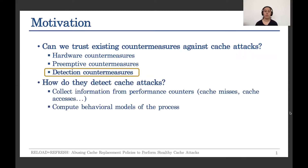These countermeasures use the information from performance counters to create behavioral models of the processes they want to protect. In the case of gas attacks, since they generate a huge number of gas misses, they use the information about gas misses to detect the attacks.